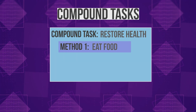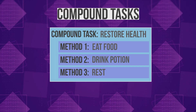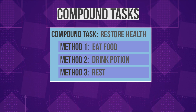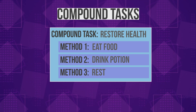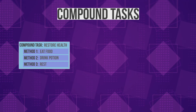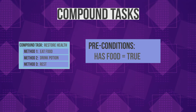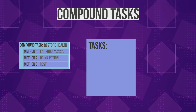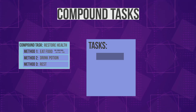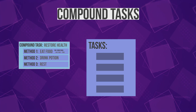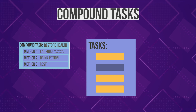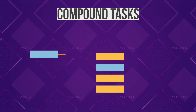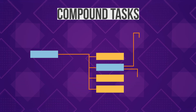Compound tasks have a set of methods which work as conditional branches that are chosen during planning. Methods have preconditions like the ones in primitive tasks and a set of tasks. These tasks can be either primitive or compound, and that's what allows the hierarchical nature of task networks.